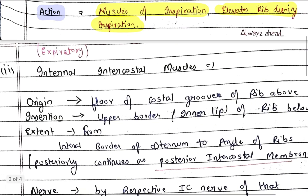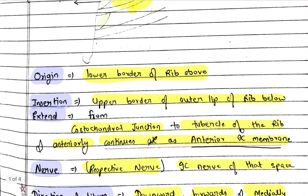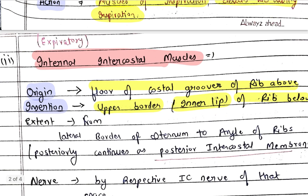Now let's talk about the internal intercostal muscle. Origin: it originates from the floor of the costal groove of the rib above. Insertion: upper border, inner lip of the rib below. So comparing: for external intercostal it was lower border of rib above and upper border of outer lip of rib below, whereas here it is floor of the costal groove of rib above and upper border of inner lip of the rib below.